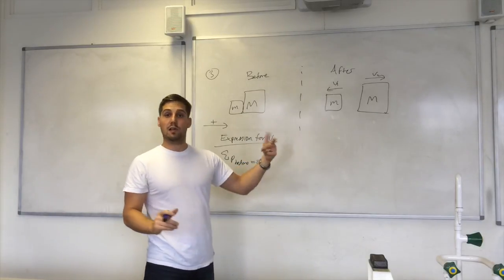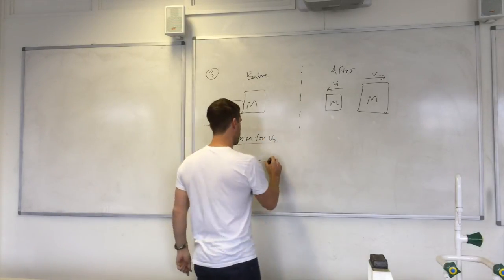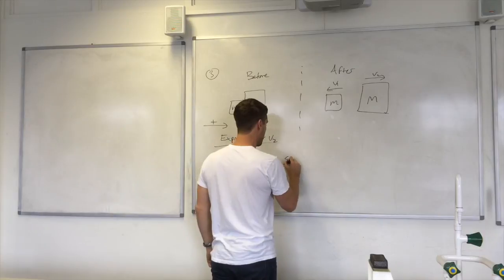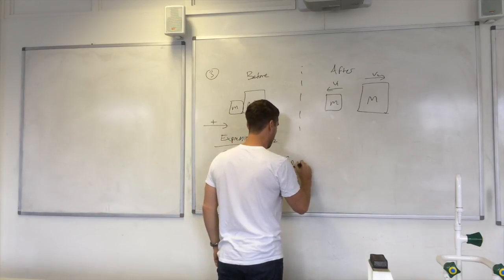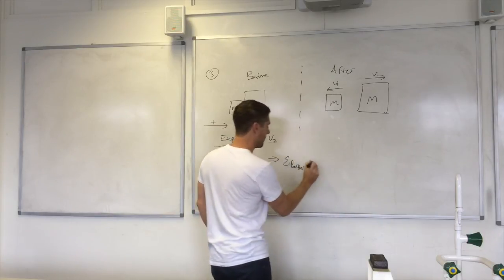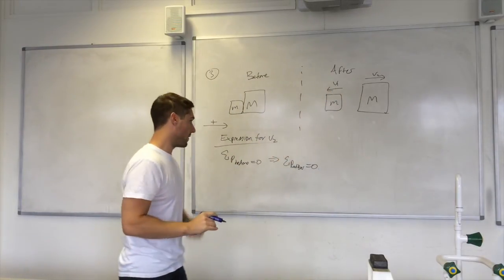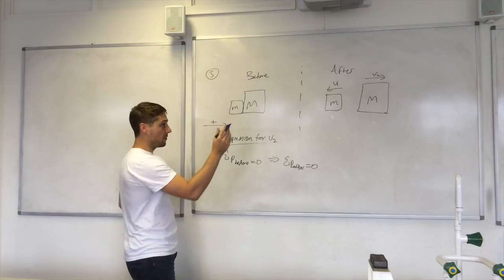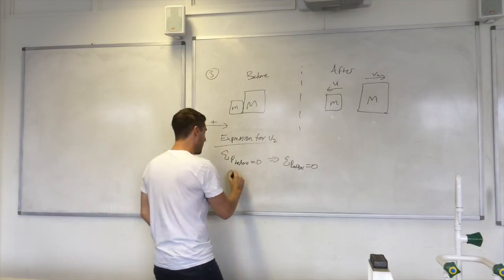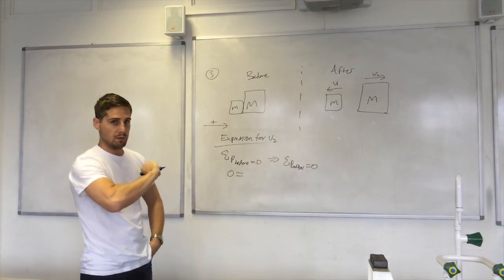So we know that the momenta here will add up to zero. Let's do the algebra. So we've got zero on the left-hand side. That's our total momentum before.